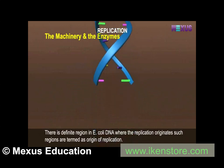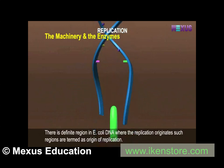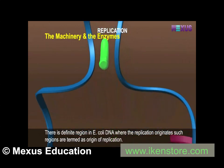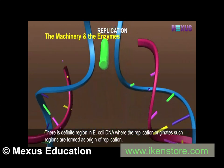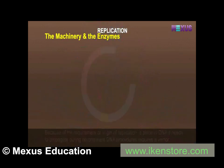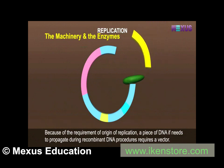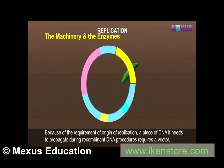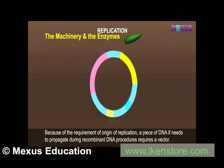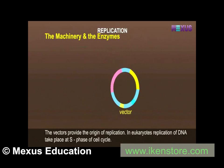There is a definite region in E. coli DNA where replication originates, termed the origin of replication. Because of this requirement, a piece of DNA that needs to propagate during recombinant DNA procedures requires a vector. The vectors provide the origin of replication.